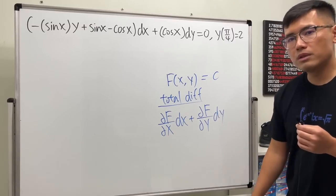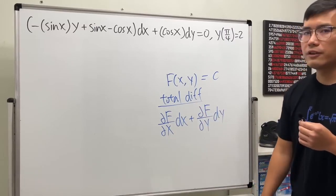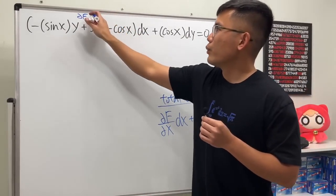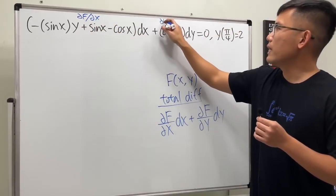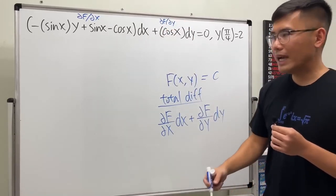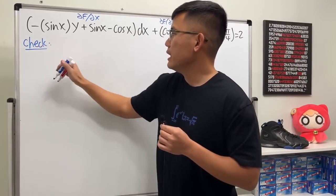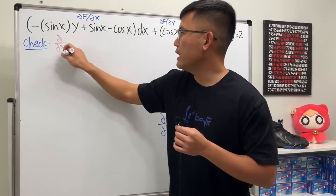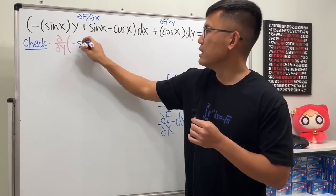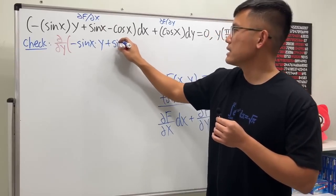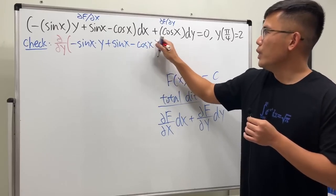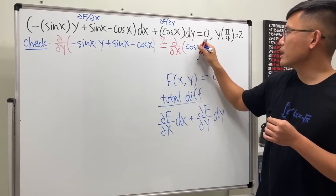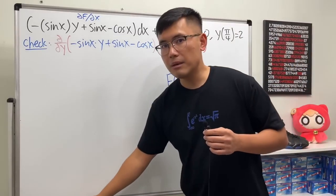How do we check? We use the fact that mixed partials have to be equal in order to make sure they came from the same function. This term is possibly the partial of F with respect to x, and this term is possibly the partial of F with respect to y. We check by doing the mixed partial — taking this with respect to y — and we get negative sine x times y plus sine x minus cosine x. We want to see if this equals the partial of the other piece with respect to x, which gives cosine x.